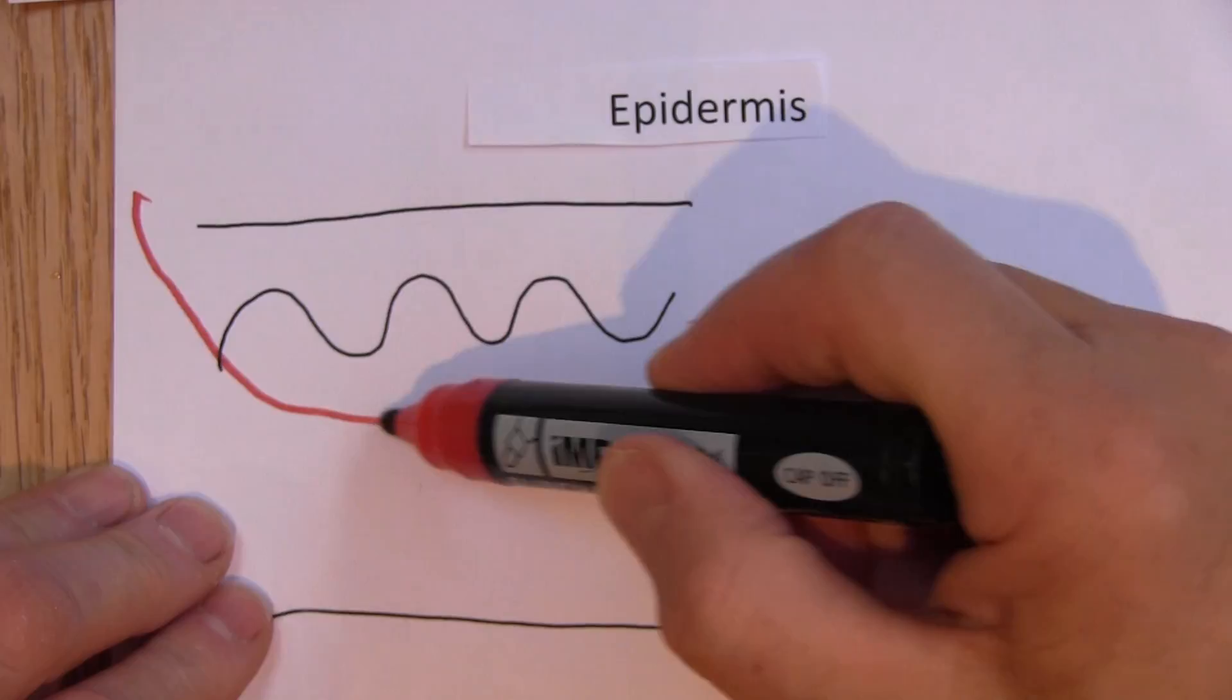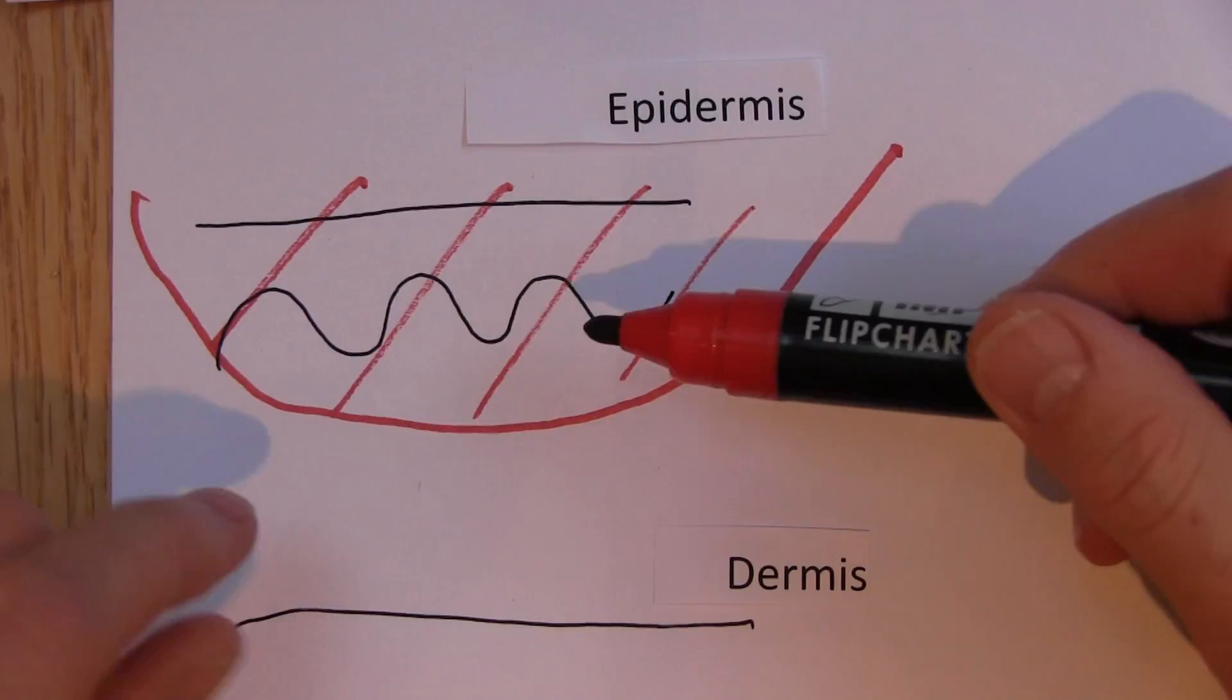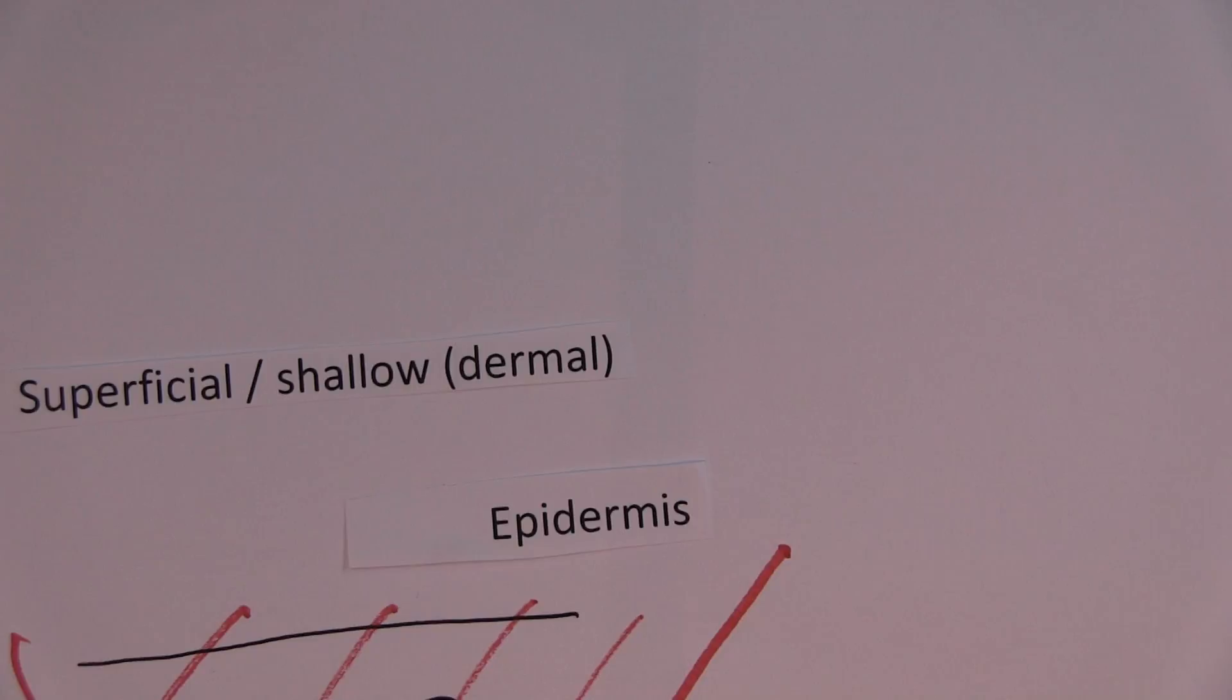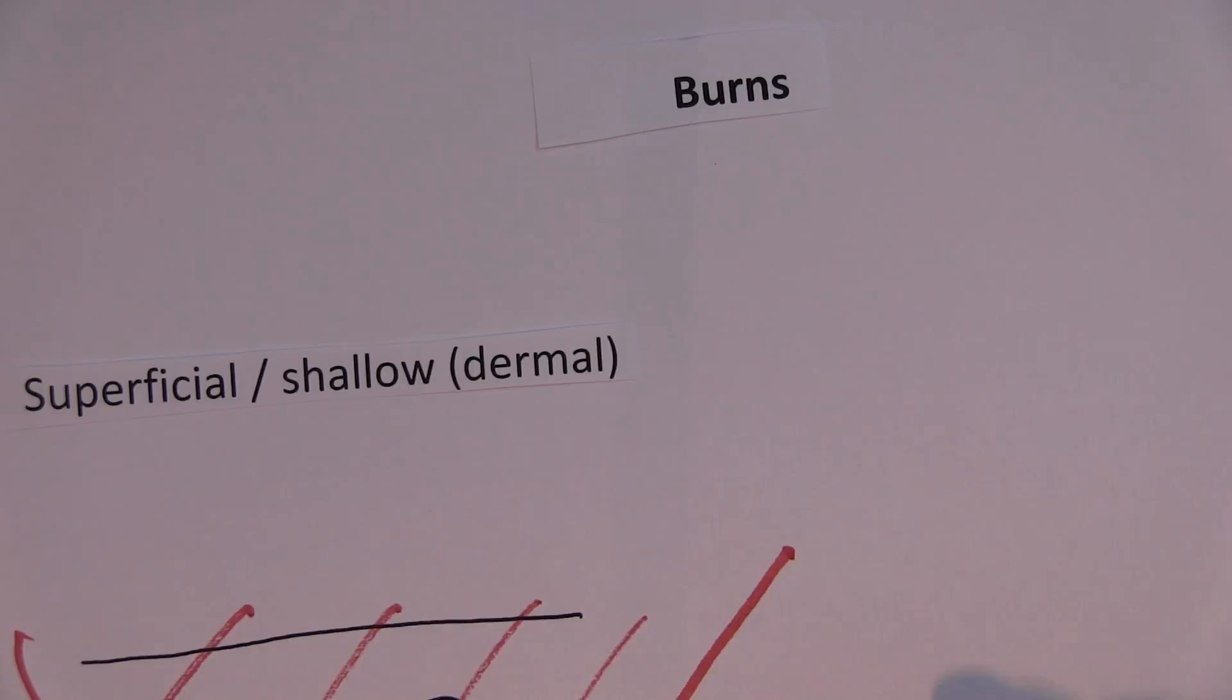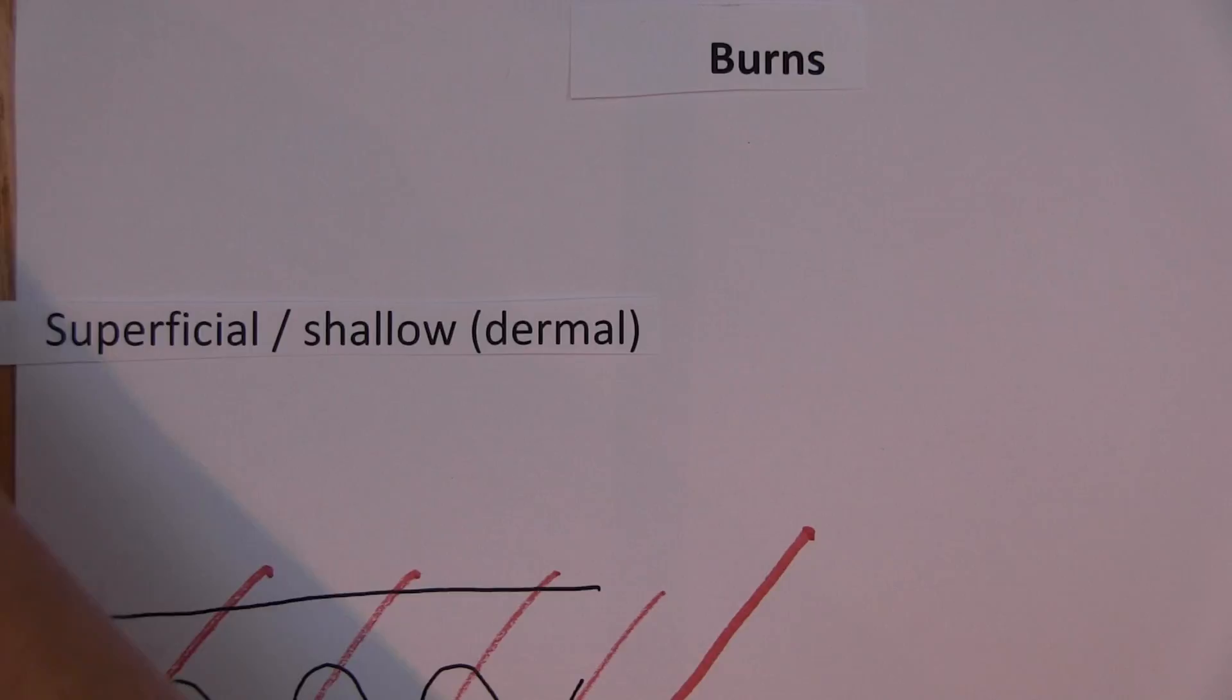This area here can be burned, losing all of the epidermis and losing some of the dermis, losing the superficial area of the dermis. It's a shallow dermal burn. So how might we recognize burns of this nature? Talking about superficial or shallow dermal burns affecting the superficial parts of the dermis.